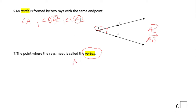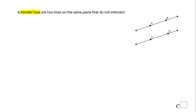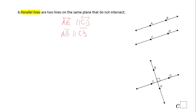Now you notice here we have two lines, and these two lines are what we call parallel lines. Parallel lines are lines that are on the same plane and they do not have a common point — they do not intersect. The notation is: line AB parallel to line CD. It's okay to write segment AB parallel to segment CD if you're just talking about the segment. This statement says line AB is parallel to line CD.